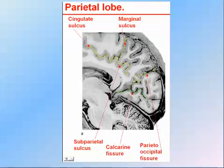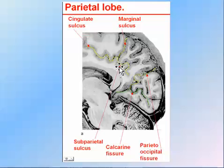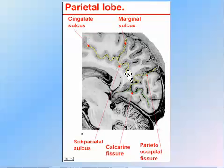At this more posterior level, the cingulate sulcus is now called the subparietal sulcus — it is a continuation of the cingulate sulcus along the medial aspect of the hemisphere. The parieto-occipital sulcus separates the parietal lobe from the occipital lobe.